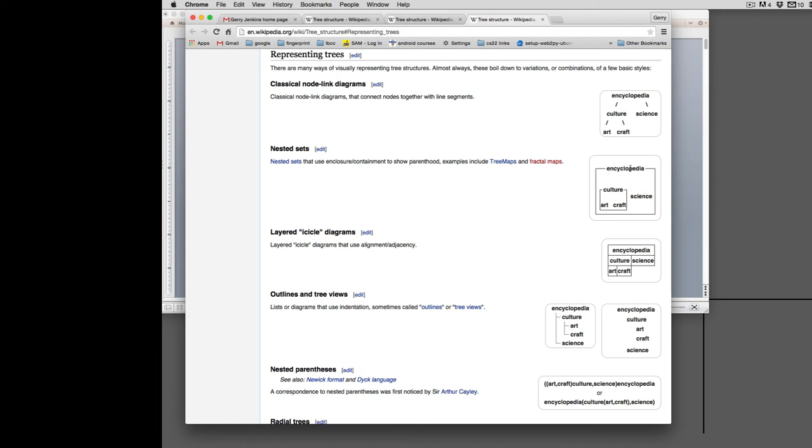You can also diagram a tree as what are called nested sets like this. So you draw a rectangle and then you're absent the subtrees inside that. You can layer them in what are called icicle diagrams which is like that. So here's the root and then you break off the two children and then here's children of culture.